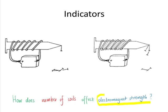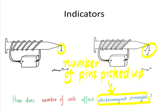What is it we use to tell us about electromagnet strength? We count the number of pins that each electromagnet can pick up. That is our indicator of electromagnet strength.